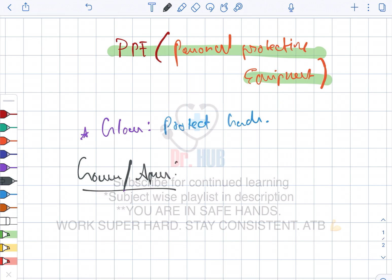...and aprons. Gowns and aprons protect the skin as well as clothing. Then comes the mask, which protects the mouth as well as...